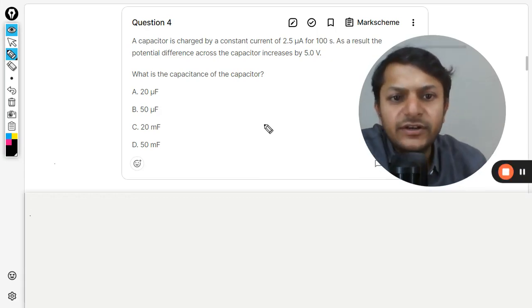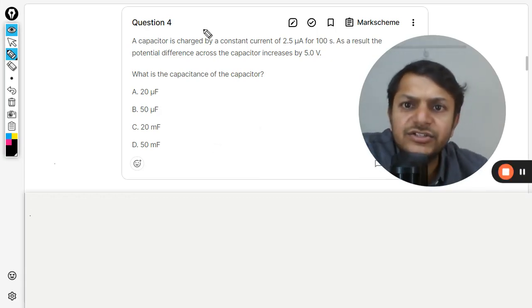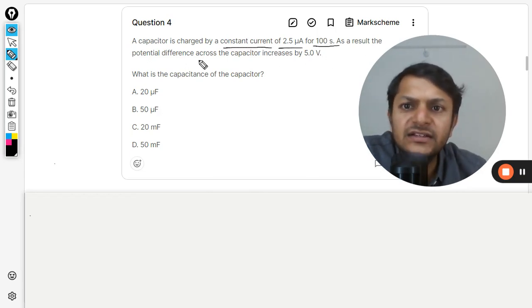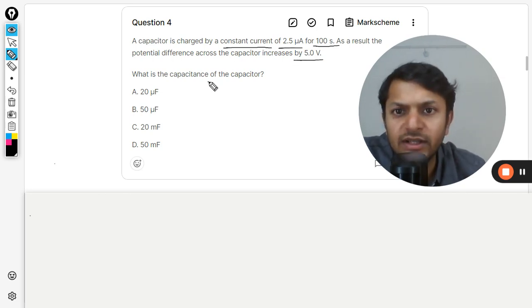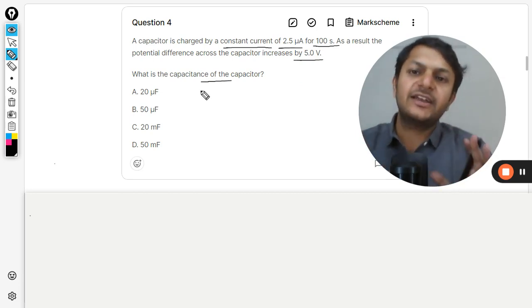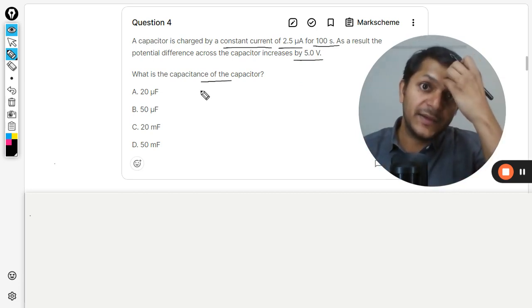Okay students, let's see what is in this question. A capacitor is charged by a constant current of 2.5 microampere for 100 seconds. As a result, the potential difference across the capacitor increases by 5 volts. What is the capacitance of the capacitor? So there are a couple of things that you need to note.